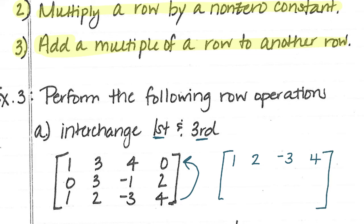And the middle row is going to stay the same, 0, 3, negative 1, and 2. And the last row is now going to be what the first row was, 1, 3, 4, and 0.